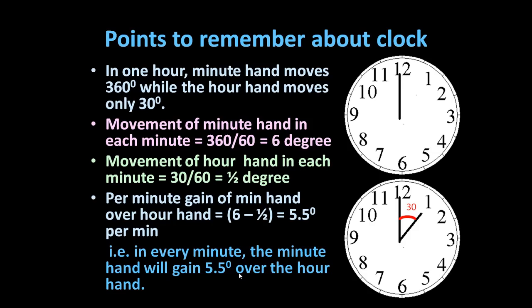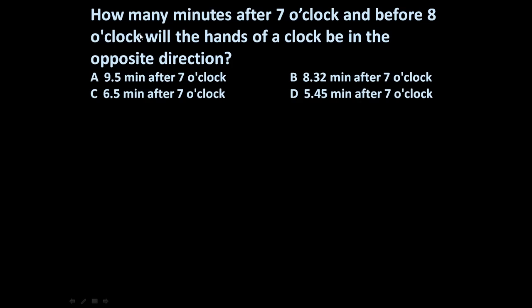Here is the problem: how many minutes after 7 o'clock and before 8 o'clock will the hands of a clock be in the opposite direction? Between 7 and 8, the hour hand and minute hand will be opposite to each other exactly once. Four options are given and we have to find the correct option.